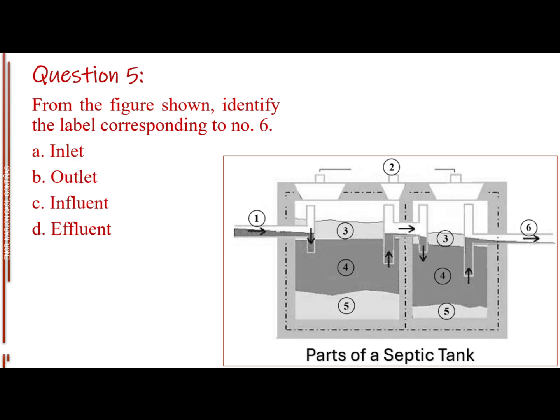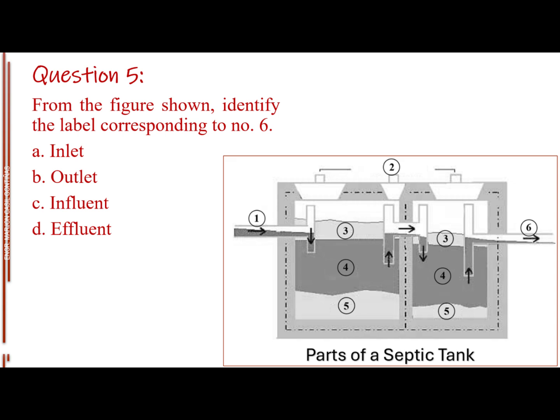Question number 5. From the figure shown, identify the label corresponding to number 6. Letter A, inlet. Letter B, outlet. Letter C, influent. Letter D, effluent. The answer is letter B, outlet.